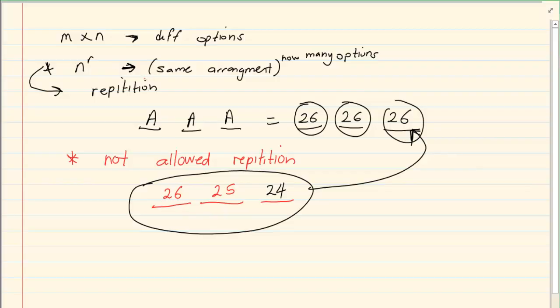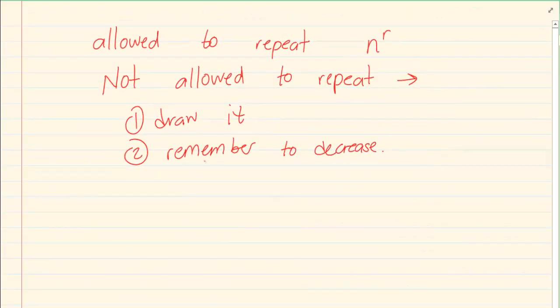You have n to the power of r if you have the same arrangements for everyone depending on how many positions. That is when repetition is allowed. But when repetition is not allowed then you must be careful and you must rather draw it.